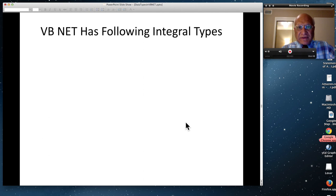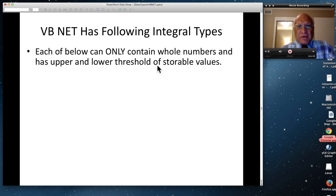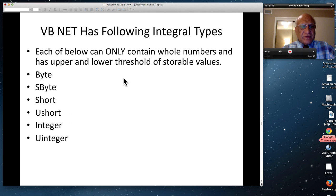So VB.NET has following integral types. And each of below can only contain whole numbers. And it has upper and lower threshold of storable values. Byte. And I'm going to go in the order that byte, range of byte will be the smallest one. And the one that will come here at the bottom will be like the highest, largest range of storable values. S byte, short, u short, integer, u integer, long, u long. That's the last one. We're going to very often use integer type in this class. Or most of the time.